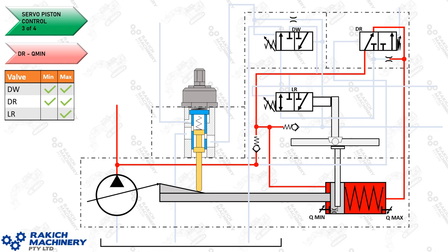Now showing the DR activated because we've reached pressure cutoff. The pump outlet pressure travels up through this gallery, now holding the servo input check valve closed and taking over the role of the 80 bar servo. So we've got cutoff pressure on the left-hand side of the servo piston, and it's also going up through the DR and into the other side of the servo piston. When the pressure is the same on both sides, the servo piston moves towards Q-min because of the spring and the greater surface area.